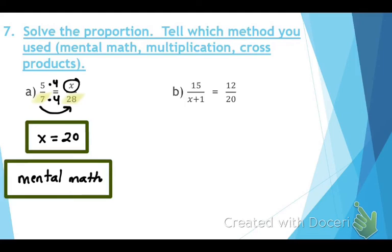For problem B, there is one method we cannot use: multiplication, because the x is in the denominator. So we will use cross products instead. Since x plus 1 is in the denominator, mental math is also harder, making cross products the best choice.